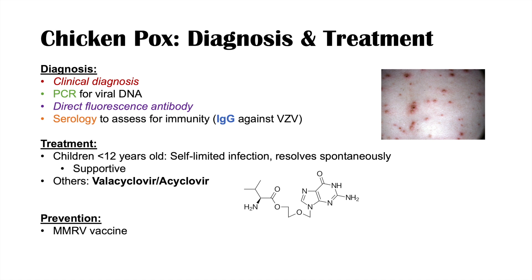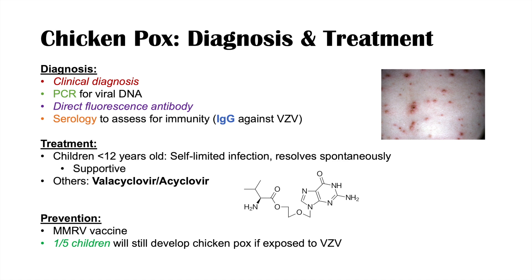The MMRV vaccine doesn't always protect all children from chickenpox, but it can reduce rates significantly. About 20%, or one in five children, will still develop chickenpox if exposed to varicella zoster virus. Even if they do develop chickenpox, it is often a milder form with fewer lesions, shorter duration of illness, and fewer complications.